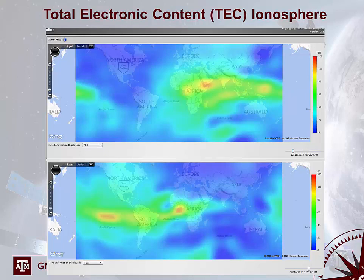The total electron content (TEC) is a measure of how active the ionosphere is — areas shown in red indicate a more charged ionosphere with more error. This changes as a function of time because Earth's rotation means the ionosphere is charged preferentially on the side closest to the sun, varying as you move away from that.